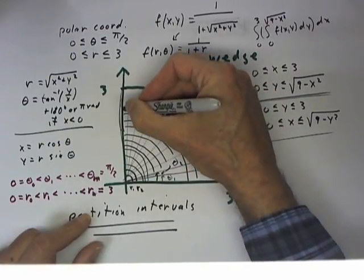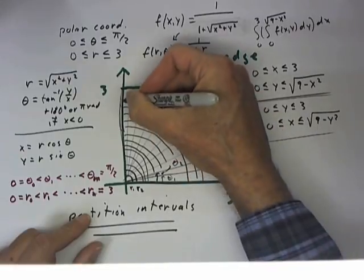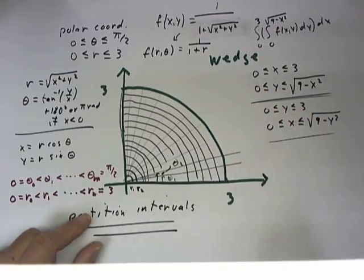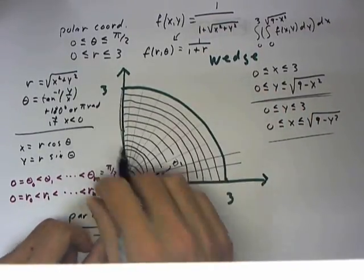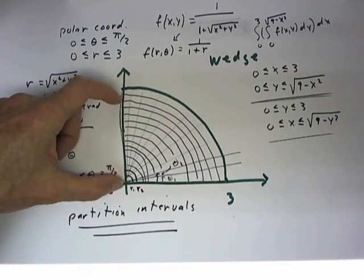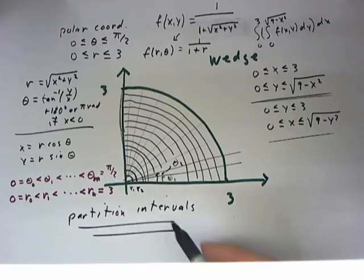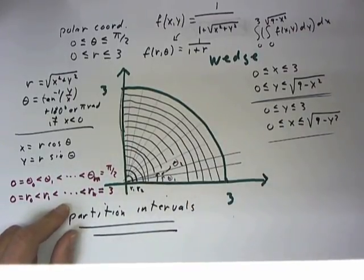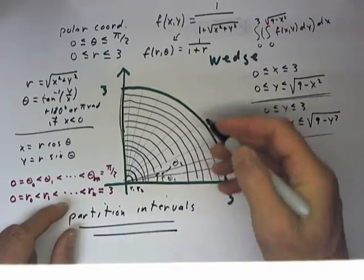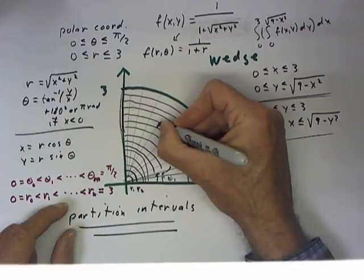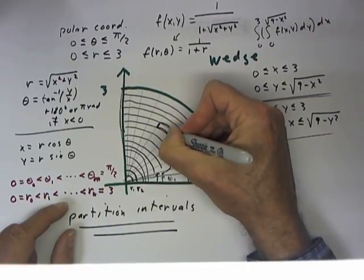So we divide our region into a number of rings. If these circles extended all the way around, we would have rings. A ring, for example, between r1 and r2, and our typical ring between some arbitrary r sub i and r sub i plus 1. This process divides our region into small area increments.